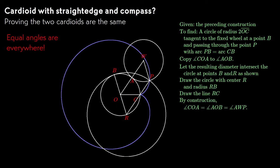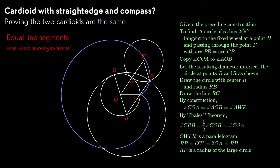The diagram we just made has equal angles all over the place. We constructed them that way. COA, AOB, and AWP were all constructed as equal angles. CRB, the one angle that we didn't construct, is given to us by Thales. So OWPR is a parallelogram, which means there are also equal line segments everywhere.